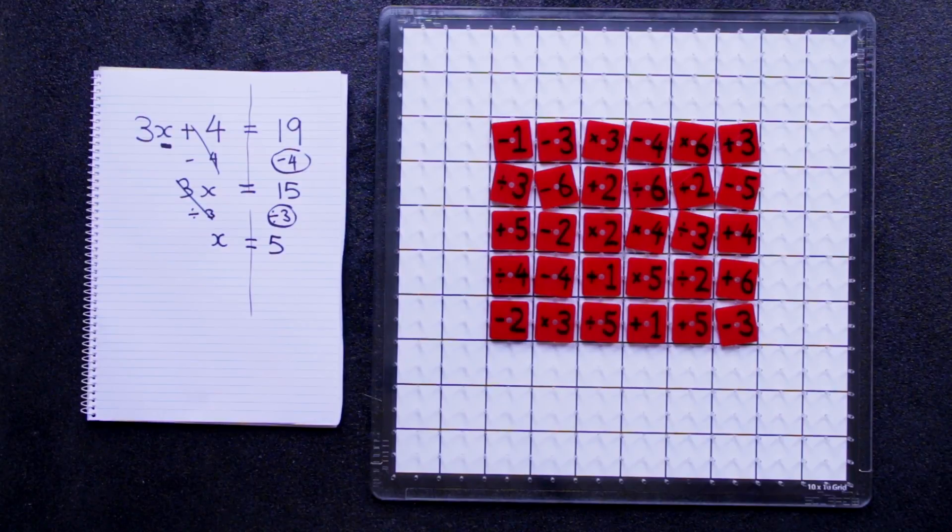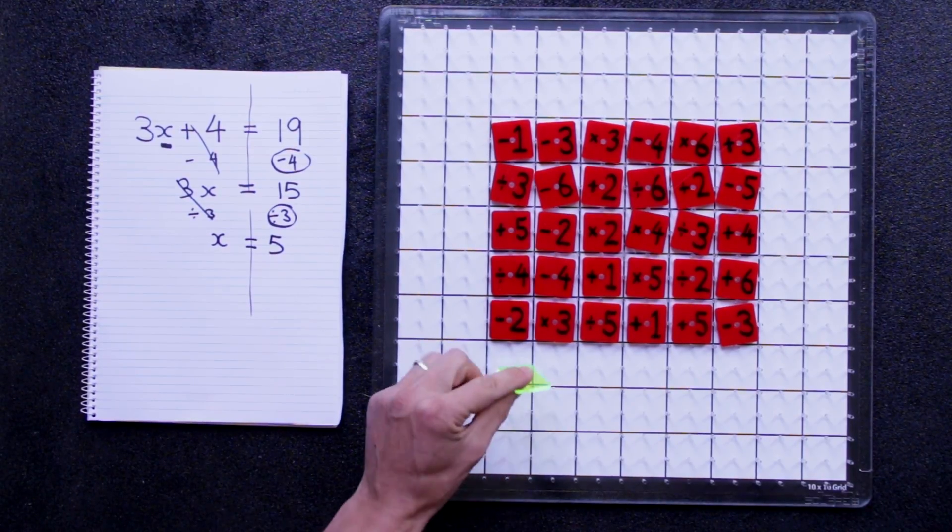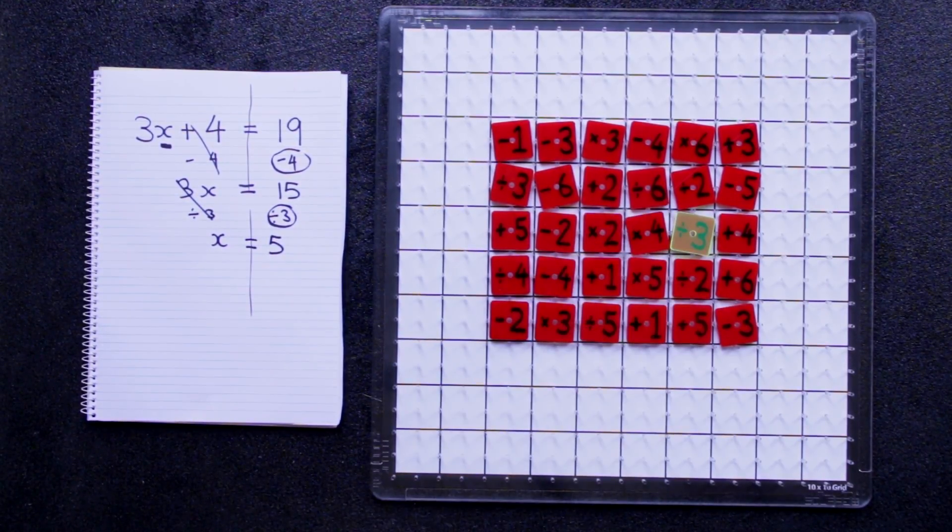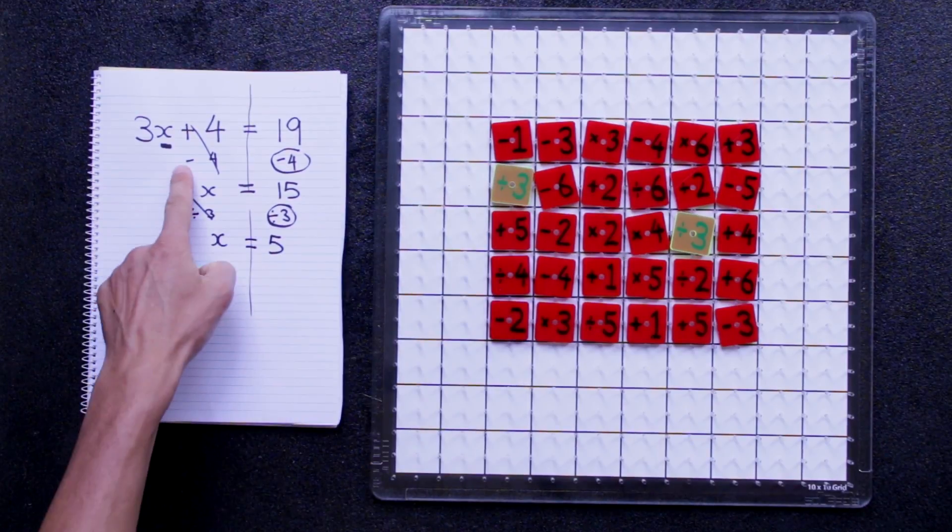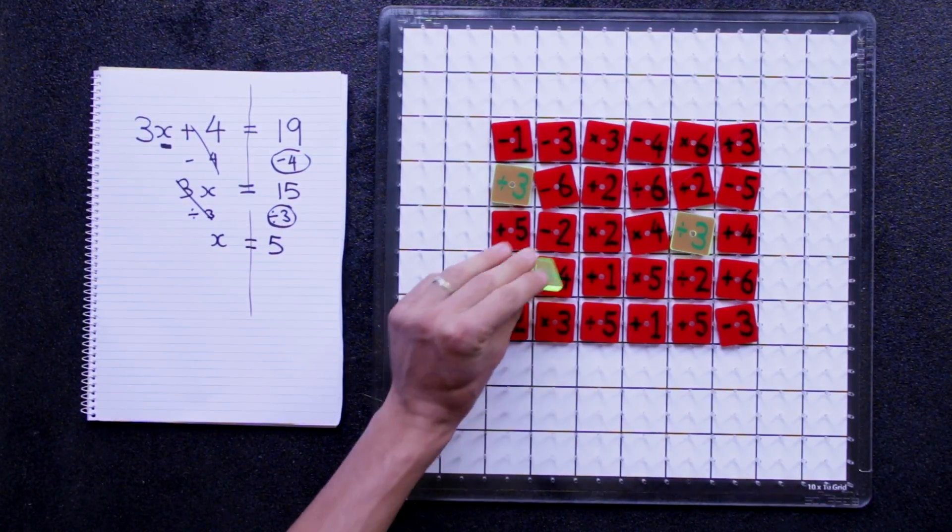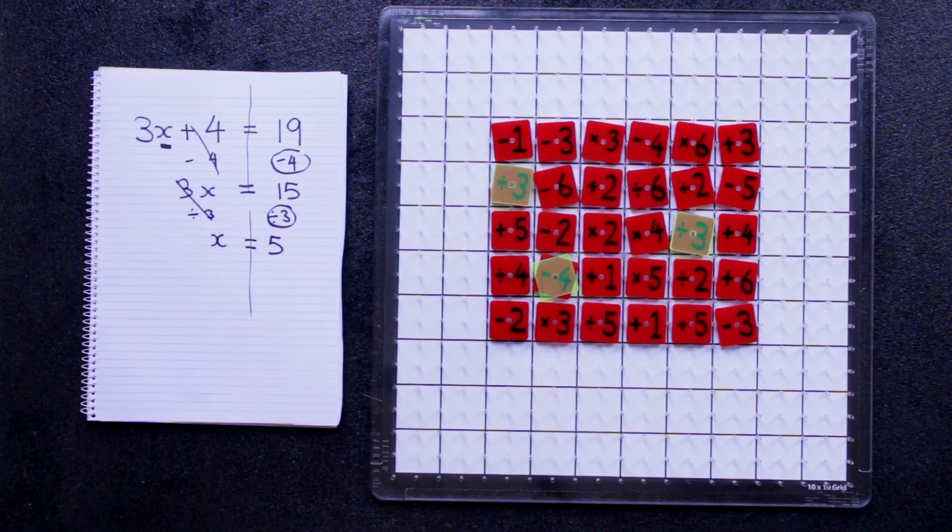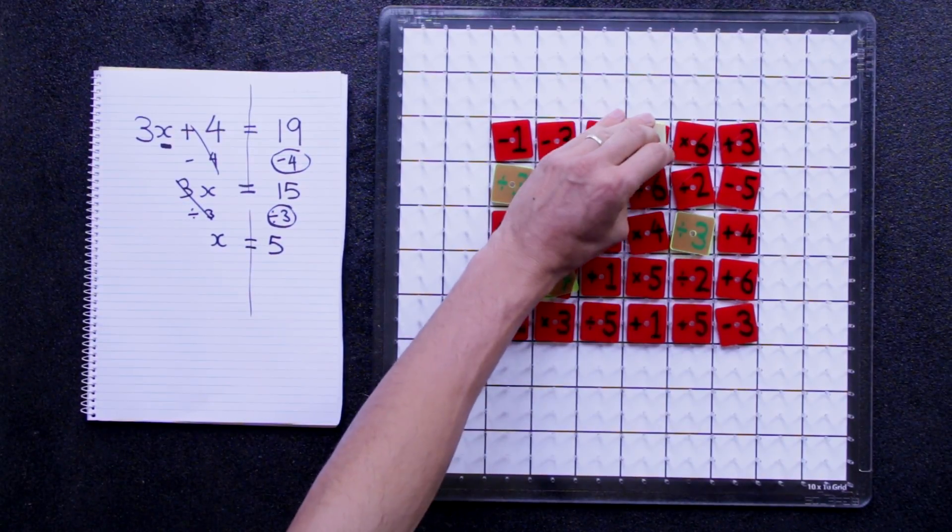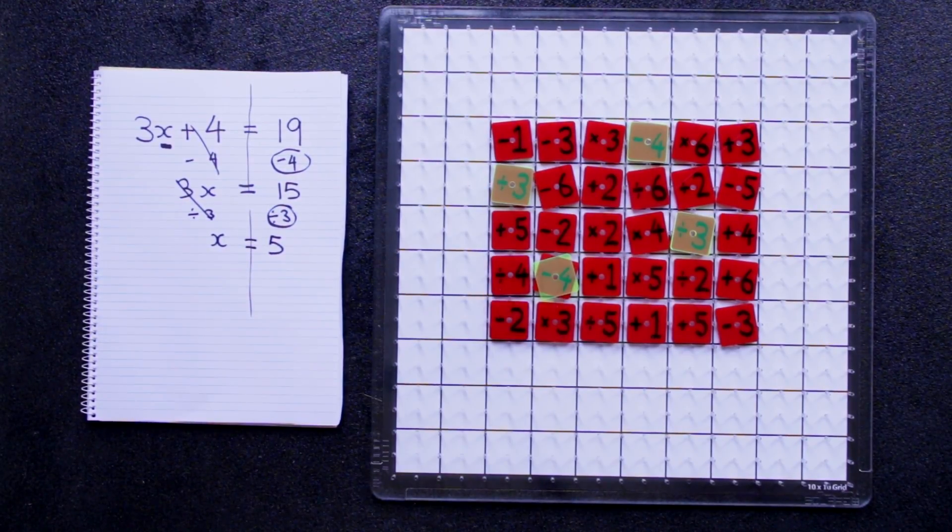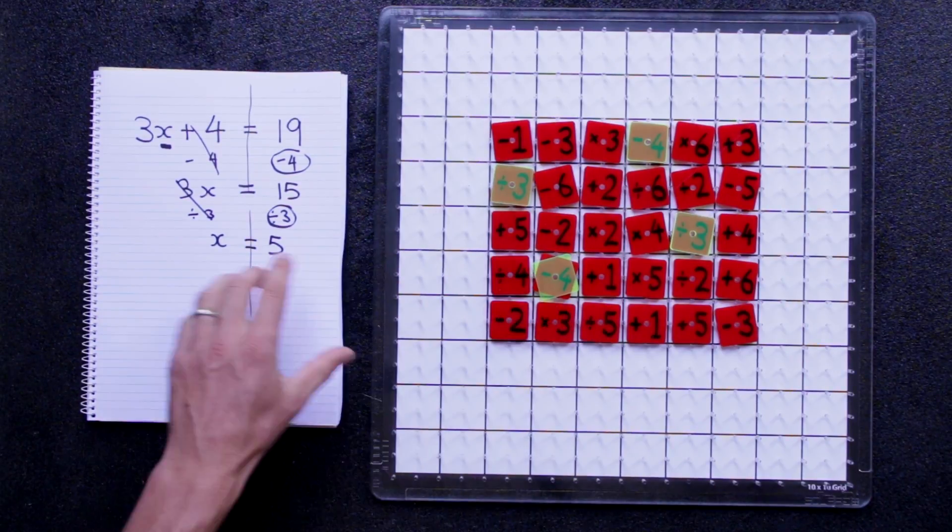If we look on the board here, and we say a divided by 3 is over here and here, and a subtracting 4 is over here. We need to start, and there's another one actually, we need to start in a corner and use the least amount of tiles possible to solve this equation.